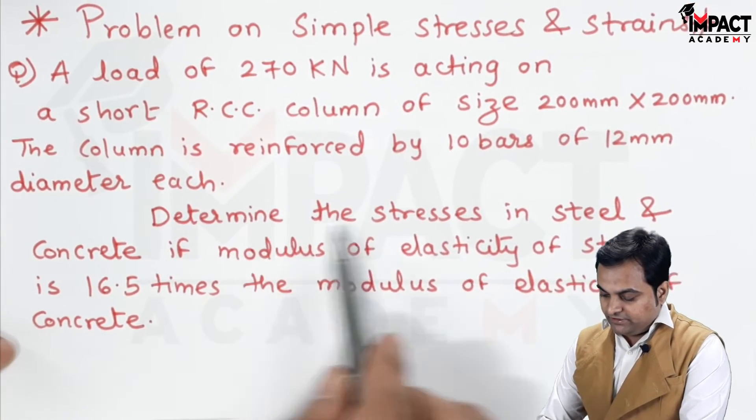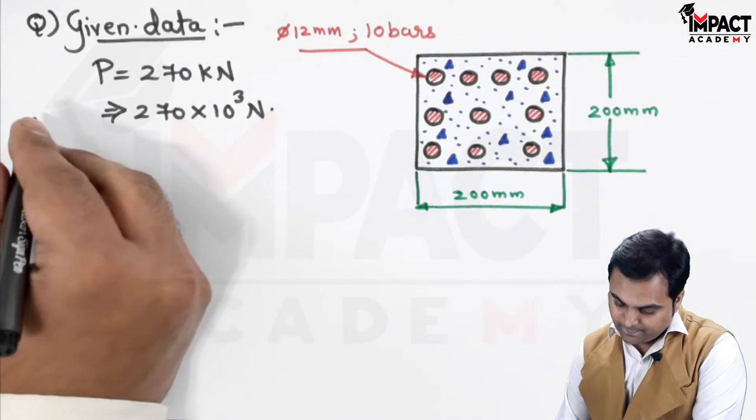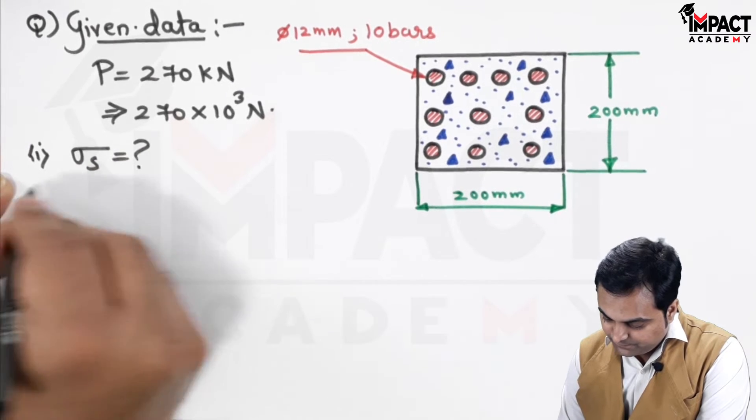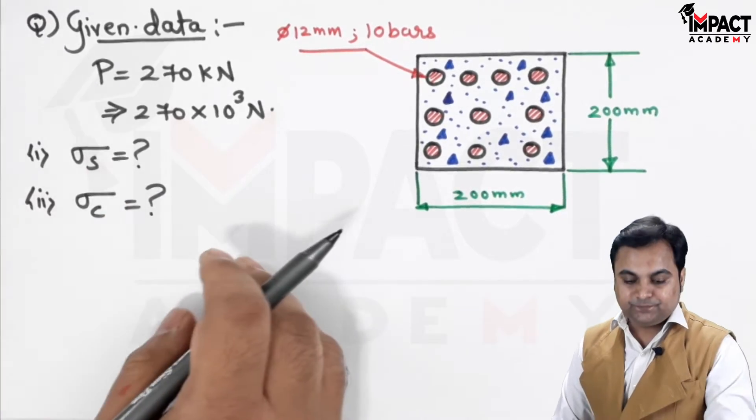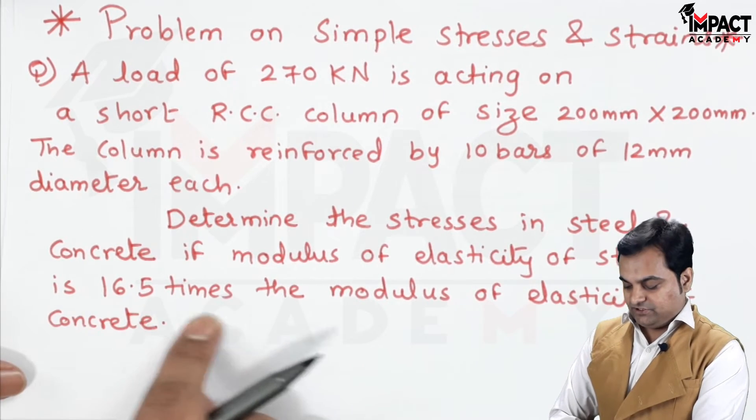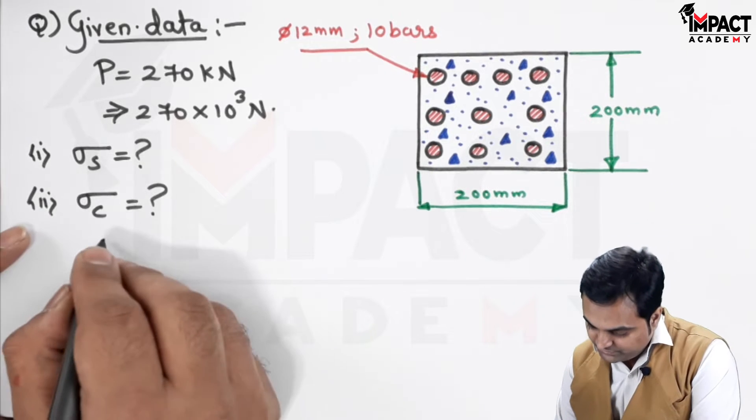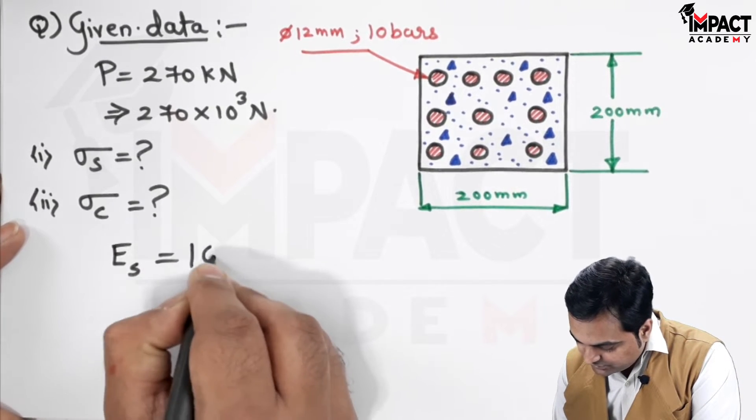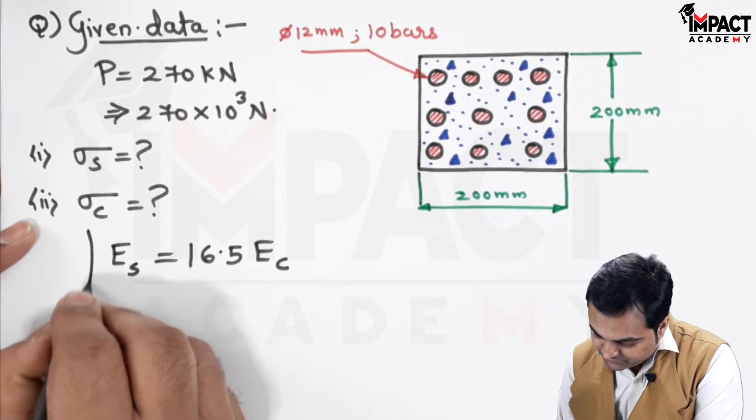Then, the total load is given. After that the question is, let us determine the stresses in steel and concrete. Sigma suffix S the stress in steel, sigma suffix C the stress in concrete. If the modulus of elasticity of steel is 16.5 times the modulus of elasticity of concrete.